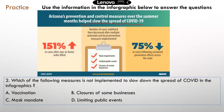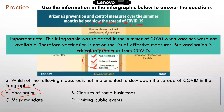Question two: which of the following measures is NOT implemented to slow down the spread of COVID in the infographic? We just went over the three things mentioned — so vaccination is not mentioned in this infographic. This infographic was released in the summer of 2020, when vaccines were not yet available. The only effective measures at the time were mask requirements, limited public gatherings, and closures of businesses. Information changes over time, so now vaccination would be a very effective measure to control COVID.